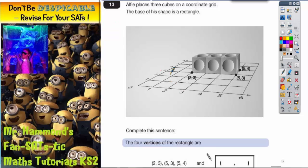Question 13 is all about coordinates. It says Alfie places three cubes on a coordinate grid—one, two, three. The base of a shape is a rectangle. Now the base basically means bottom, so we're talking about the bottom of his shape being a rectangle.